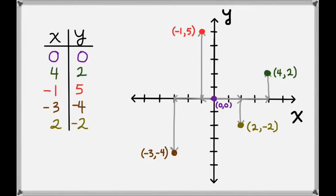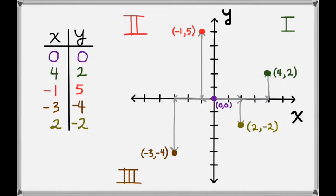When both the x- and y-values are positive, like in the case of (4, 2), we say we're in the first quadrant. When the x-value is negative and the y-value is positive, the point is in the second quadrant, like the point (-1, 5). When both the x- and y-values are negative, we say the point is in the third quadrant, like (-3, -4). And if the x-value is positive but the y-value is negative, we say the point is in the fourth quadrant, like the point (2, -2).